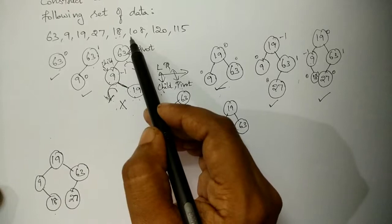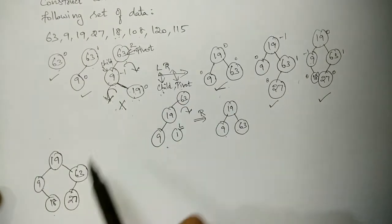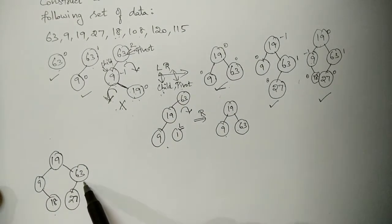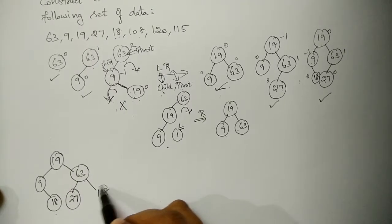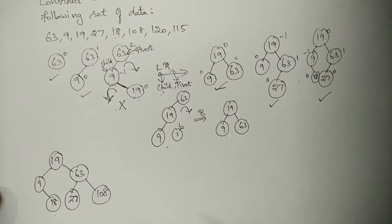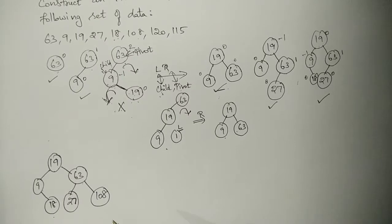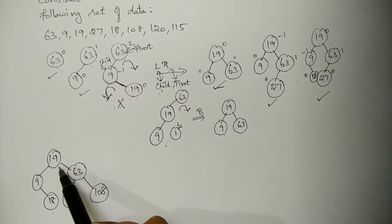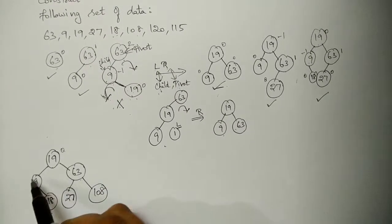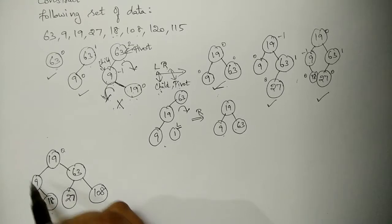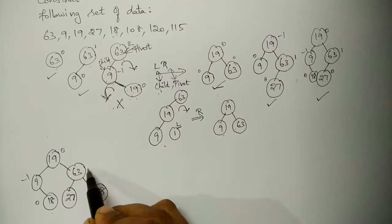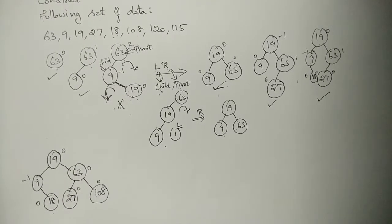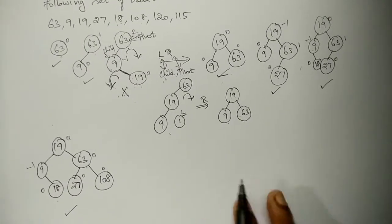The next data to be inserted is 108. So 108 is greater than 19, move right side, greater than 63. So it is inserted to the right side of 63. Now check the balance factor: 2 minus 2 is 0, 0 minus 1 is minus 1, and 1 minus 1 is 0. So the tree is balanced.